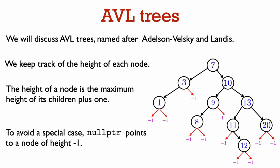So here we think of all these null pointers as pointing to nodes of height minus one. Then we can compute the heights of nodes from the ground up. We know that leaves have height zero. We can then recursively define the height of a node to be one plus the maximum height of its children. You see that this formula also works for leaves. A leaf has two null pointers coming out of it, so its height is one plus the maximum of minus one and minus one, or zero.